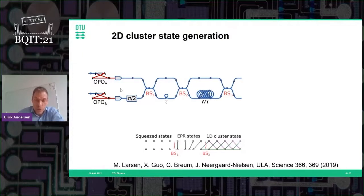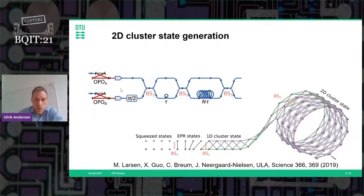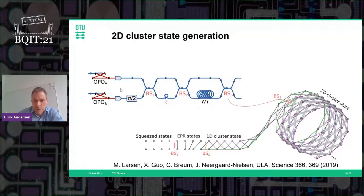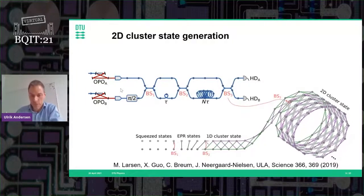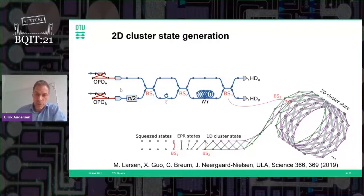To add another dimension for two-mode gates, we add another delay line of length N times tau and another entangling operation, coiling up the 1D cluster state into a two-dimensional cylinder. Adding beam splitter number three links the coiled-up 1D cluster state into an entangled two-dimensional cluster state. We then verify this by measuring the nullifiers and ensuring their variances are below the shot noise level.